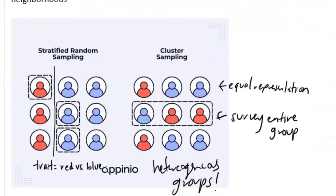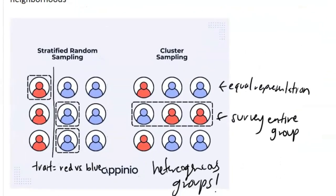Here's a diagram to make the difference clear. For a stratified random sample, I split into red people and blue people, and within each group I do a simple random sample. For cluster sampling, instead of homogeneous traits, my groups have equal heterogeneous representation. So I have some red and some blue people in each cluster, and when I pick who to survey, I pick entire clusters — I pick a random cluster and sample everybody in it.